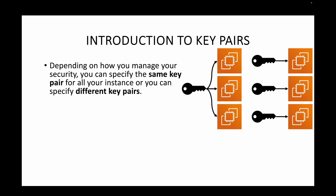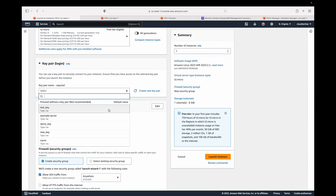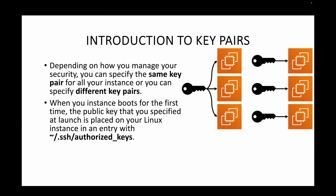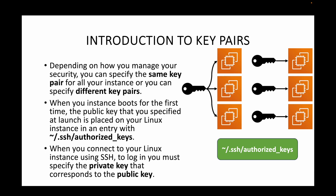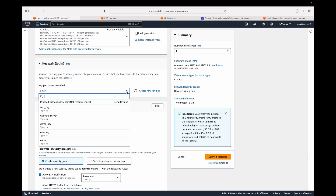Whenever we launch EC2 instances, AWS stores the public key of the specified key pair in the EC2 instance. This public key will be stored at the location: home directory/.ssh/authorized_keys. This is where the public key is stored in your Linux instances when you launch an EC2 instance. When connecting via SSH you will need to specify the private key that corresponds to the public key you selected.